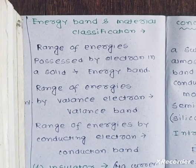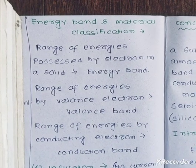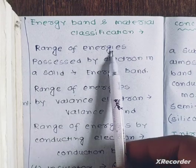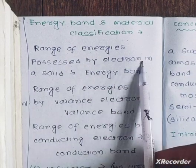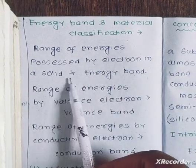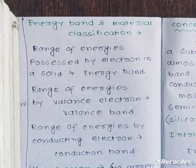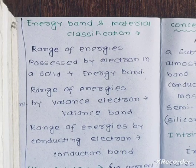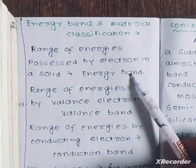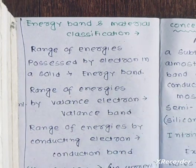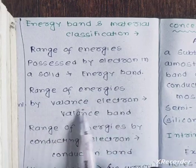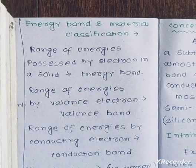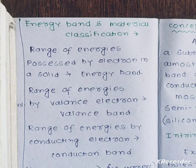We will discuss the energy band with electricity. The energy band is the range of energy possessed by electrons in a solid material. The range of energy of the valence electron is known as the valence band. The valence band is the outermost occupied band given by the valence electrons.